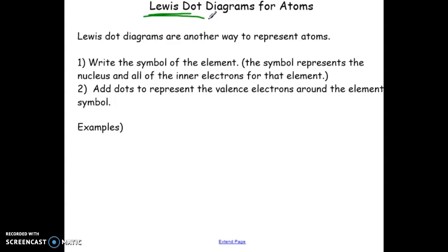So it's kind of like a little mini shortcut to drawing atoms. Instead of drawing the nucleus and all of the different energy levels, we write the symbol of the element. And the symbol of the element is representing the nucleus and all of the inner electrons. And all we're going to do is add dots to represent the valence electrons only.